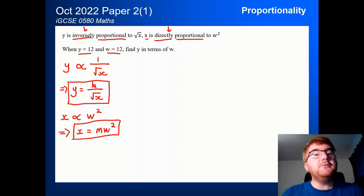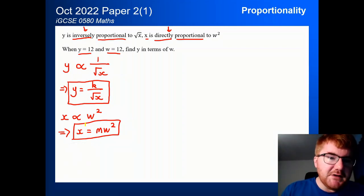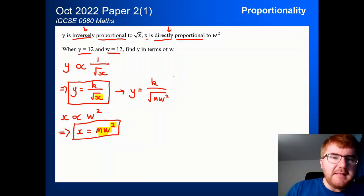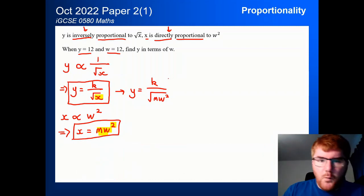Now, this is quite an untypical question here. Again, it hasn't worked like previous questions in the past. What I'm going to do here is substitute one into the other. So wherever I see an x in here, I'm going to replace it with mw squared. So combine the two equations together. If we do that, so I'm going to rewrite this top equation here. I'm going to get y is equal to k, some constant, and then the square root of mw squared.